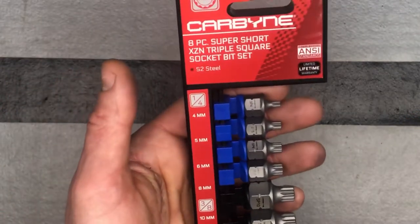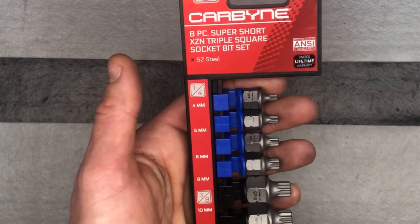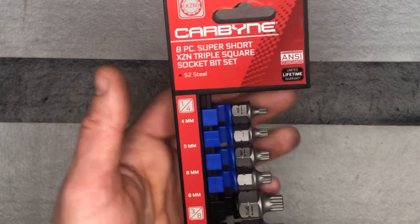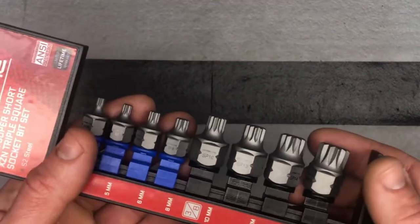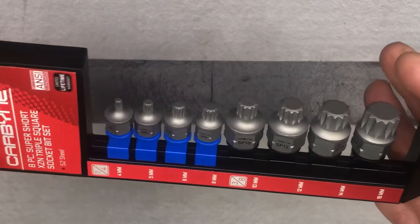This is the XZN triple square eight-piece super short socket bit set. All hardened S2 steel, so they're going to be stronger than CR-V.